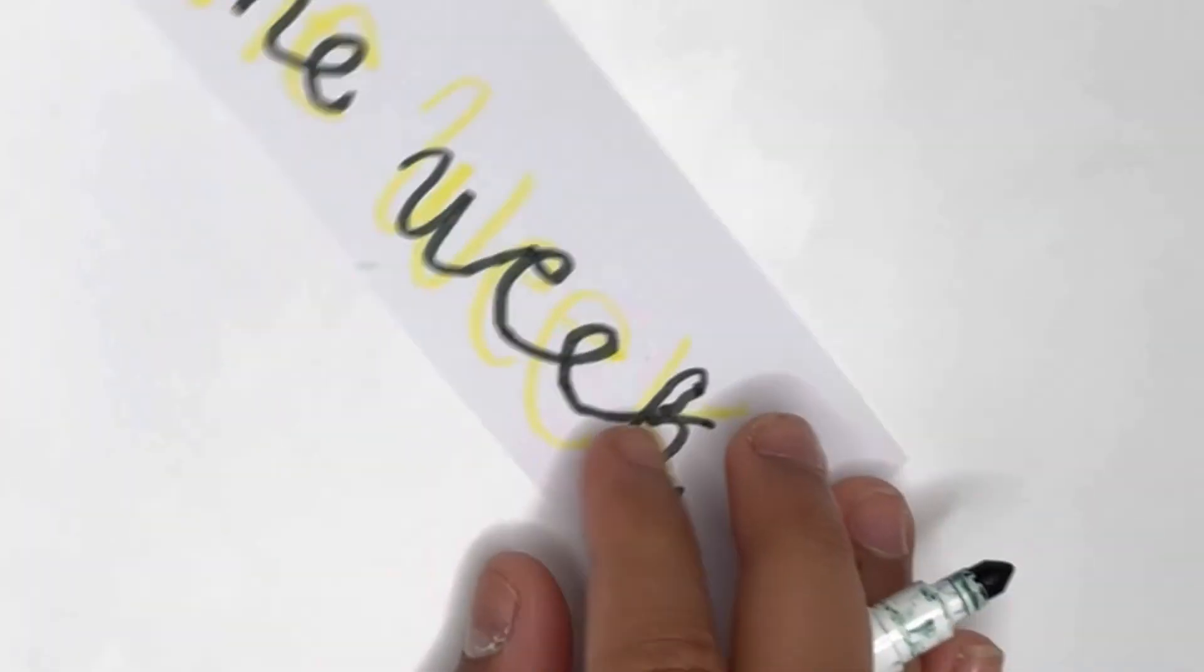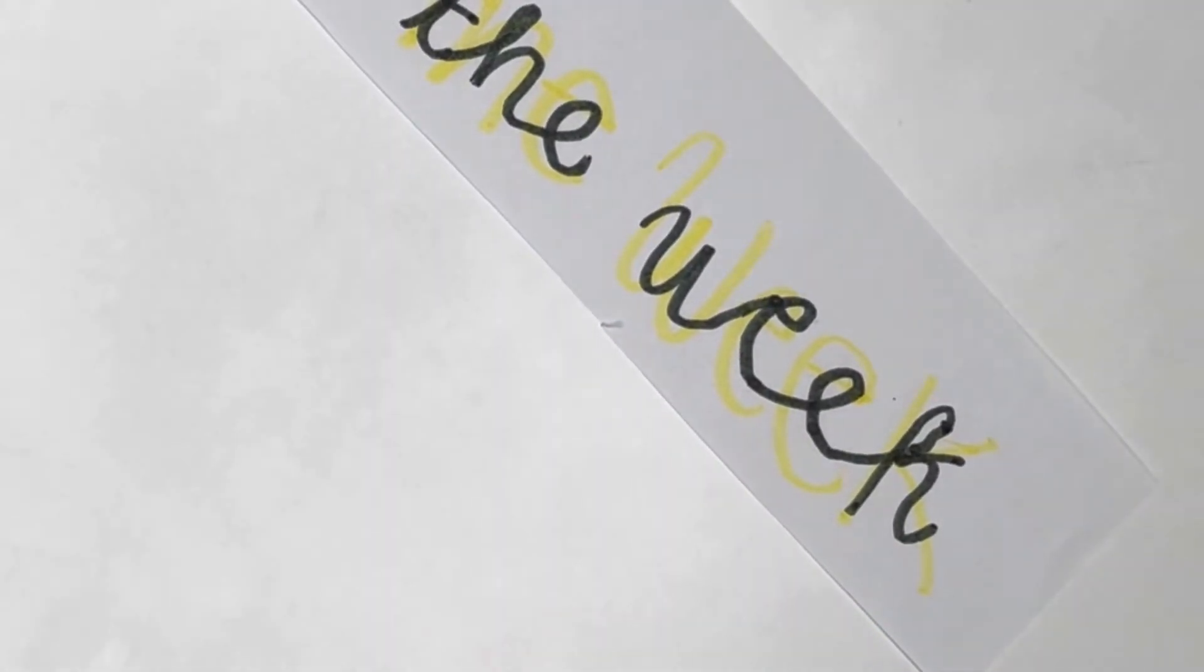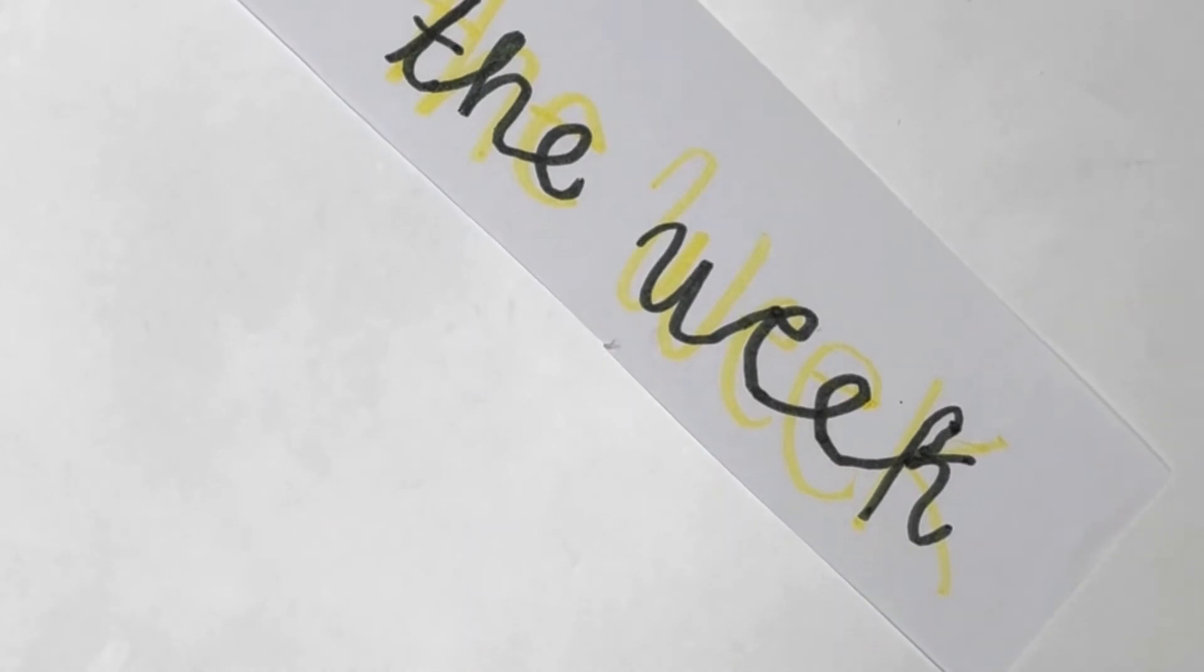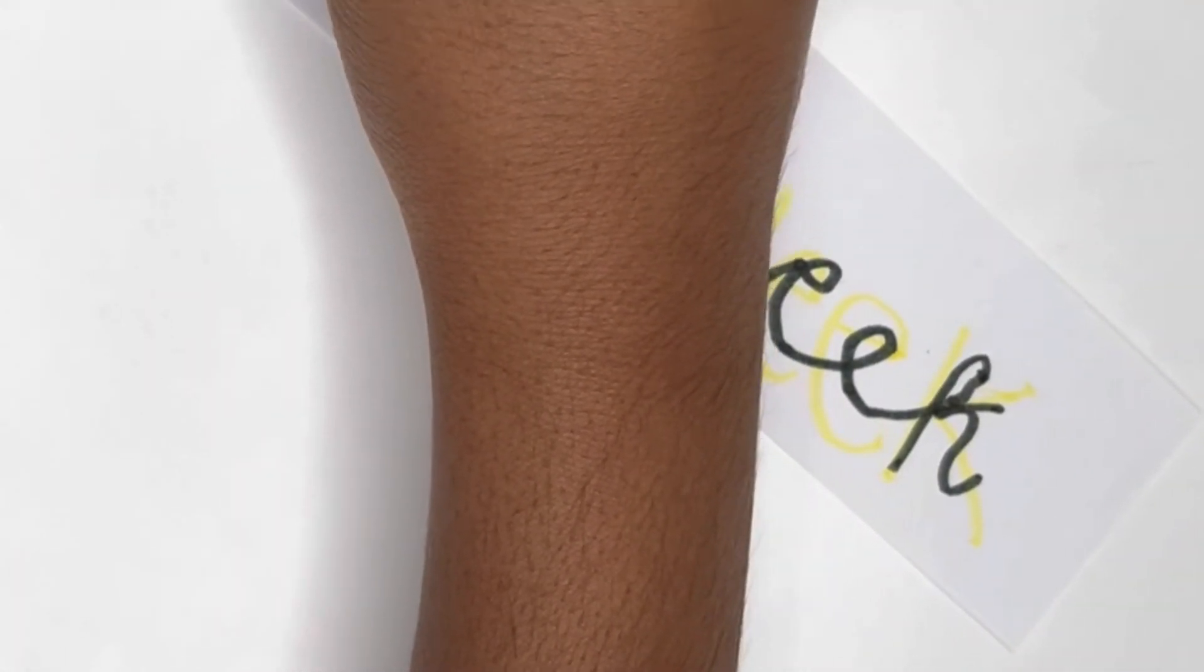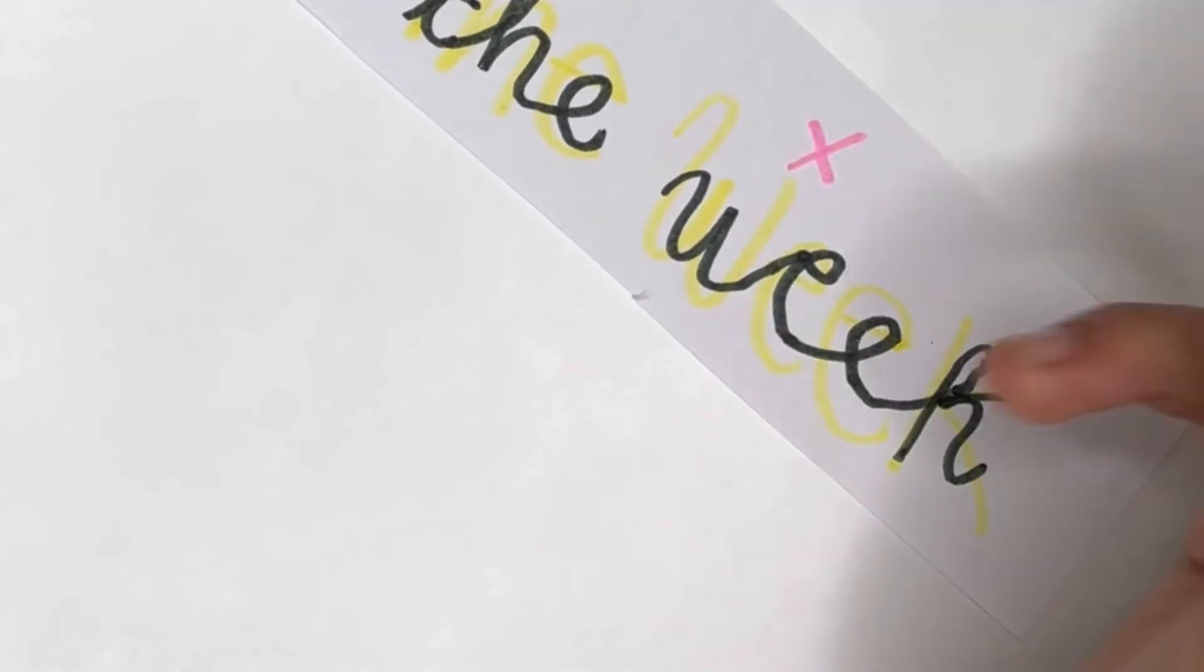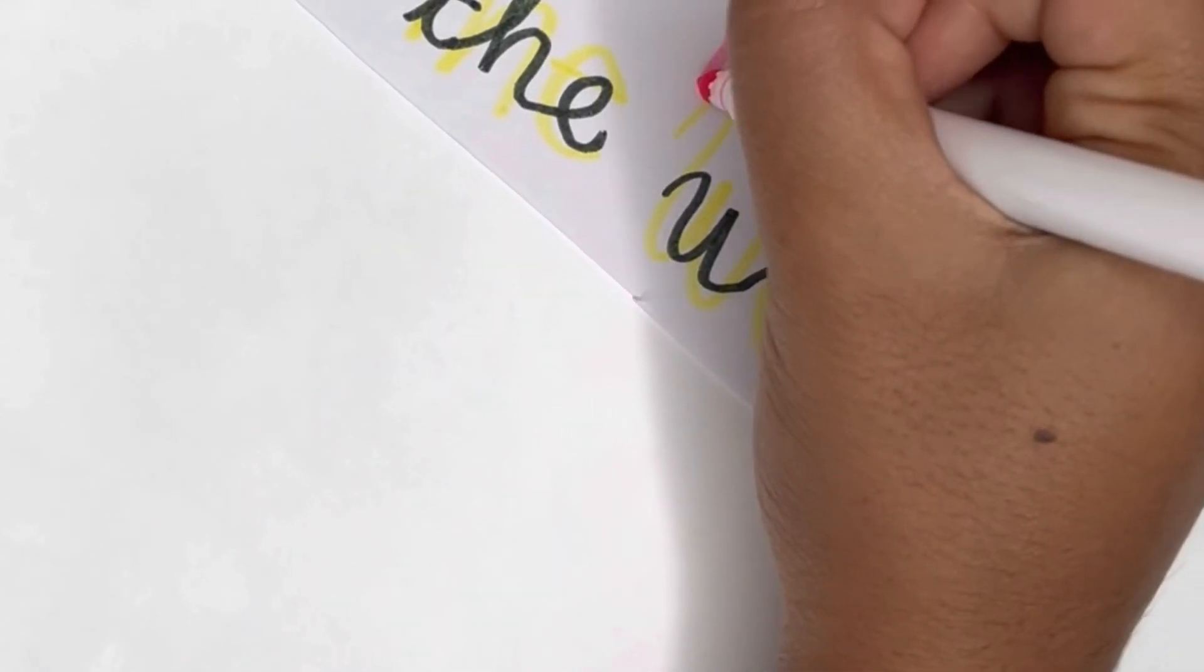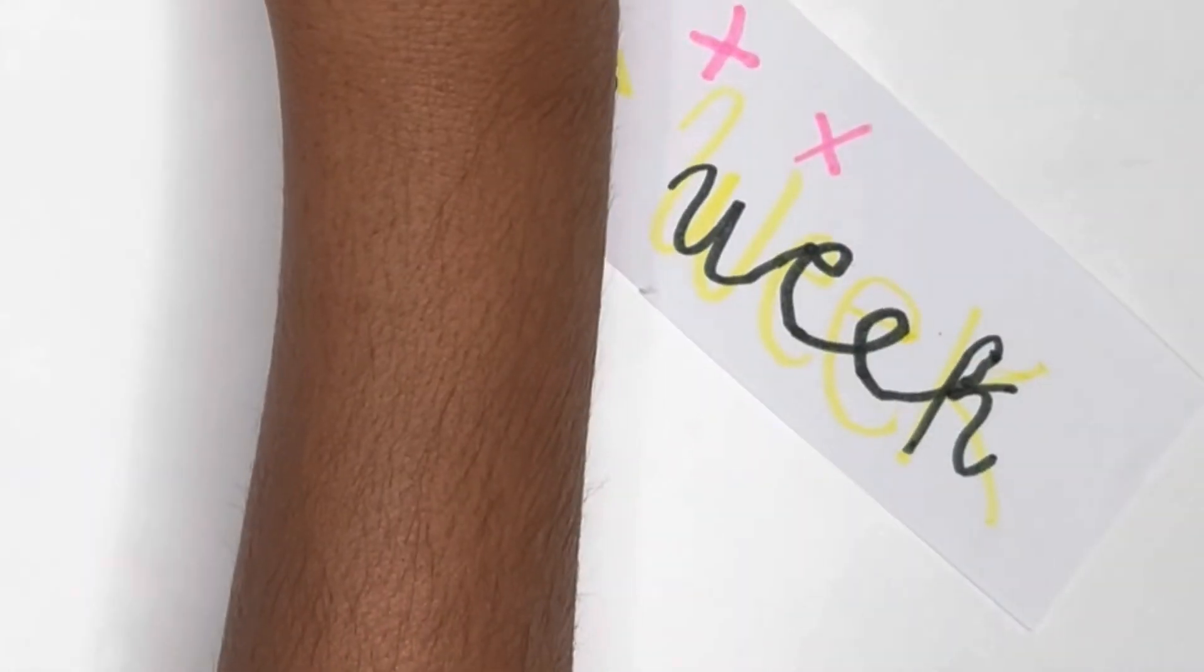And there we have our first one, 'days of the week.' Now you can add a little bit of color if you do have it. I'm doing this just to be a little bit extra. Again, you don't have to do this, and I'm just going to add like little stars around it. So no need for this at all. I'm literally adding plus signs.